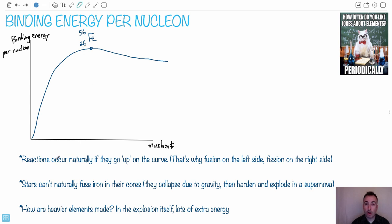So the important thing to know is this. First of all, reactions will occur naturally, which means in a star. Remember I said inside a star, for example, you've got hydrogen turning into helium. That's a natural process. But they'll happen naturally if they go up in the curve.